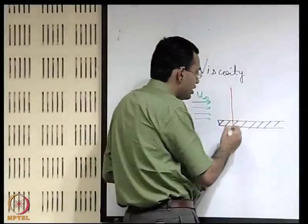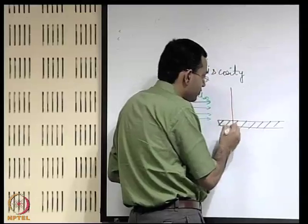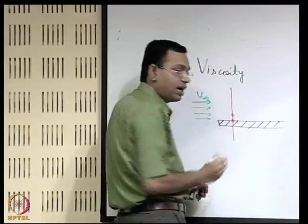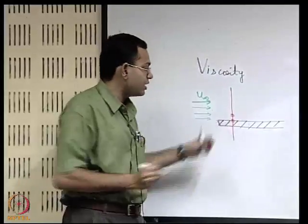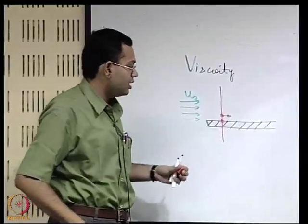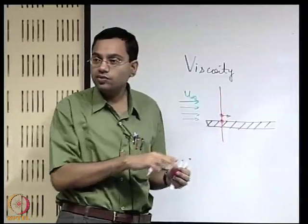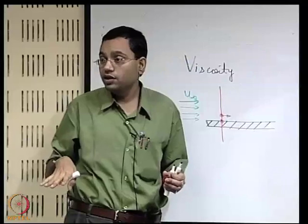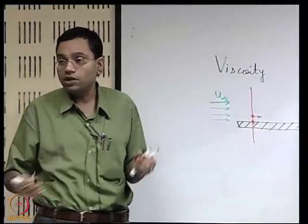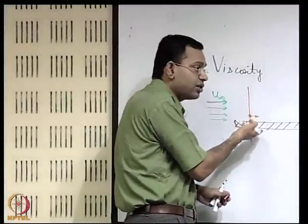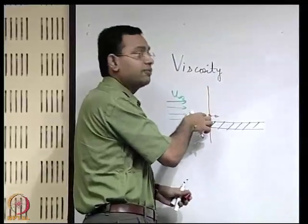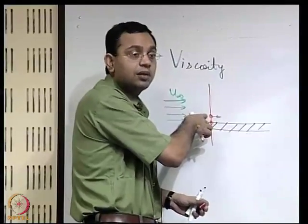At the wall the velocity is zero; as you go up the velocity increases but is not the same as u-infinity. If the fluid had no viscosity, it would never feel the effect of the wall. But because the fluid has viscosity, the effect of momentum disturbance is propagated from the bottom layer upward. The layer feels this not directly but implicitly.